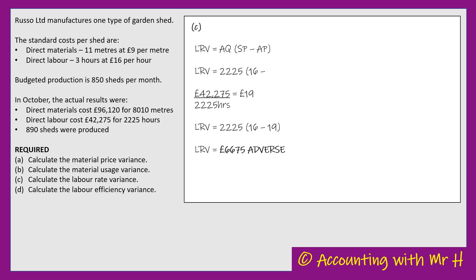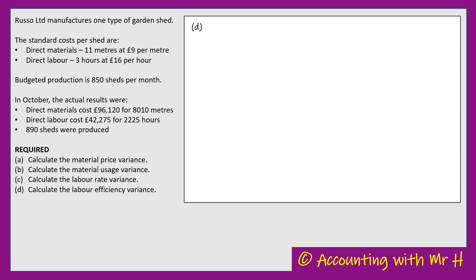On to the last one — part D: calculate the labour efficiency variance. The formula is SP × (SQ − AQ), which is the same as the material usage variance. Material usage is about how well we use materials; labour efficiency is about how productive the workers were — how quickly they made each shed. The two variances about price (parts A and C) share one formula, and the two variances about how well you use something (parts B and D) share another.